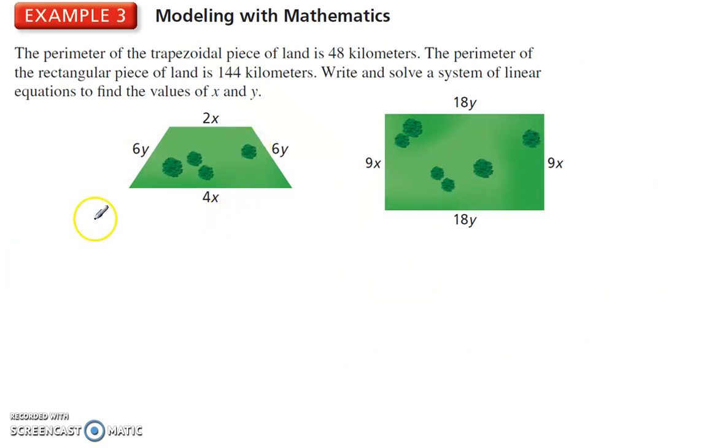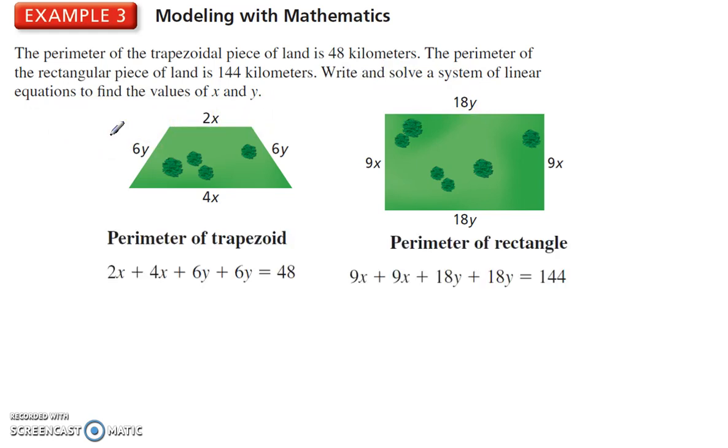Finally, here's an example. We have a perimeter of this trapezoidal piece of land which is 48 kilometers, and the perimeter of this rectangular piece is 144 kilometers. We want to write and solve a system of linear equations to find the values of x and y. The perimeter is all the sides added up.